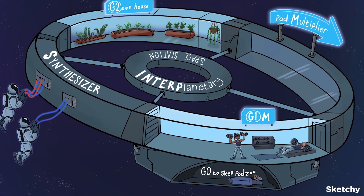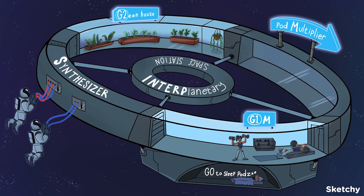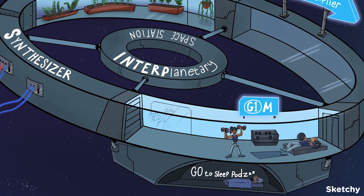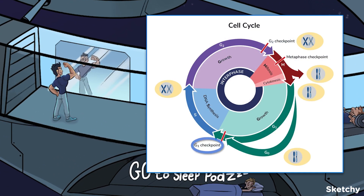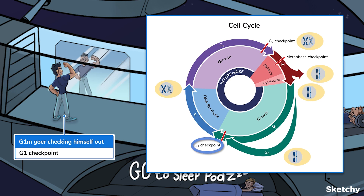Let's talk about cell cycle regulation. There are three important checkpoints in a cell's life: G1, G2, and the metaphase checkpoint. The G1 checkpoint is present at the end of G1, making sure the cell has grown enough in size and has all the necessary components for DNA synthesis. This process is regulated by growth factors such as insulin, platelet-derived growth factor, epidermal growth factor, and erythropoietin, which bind to tyrosine kinase receptors allowing the cell to enter the S phase.